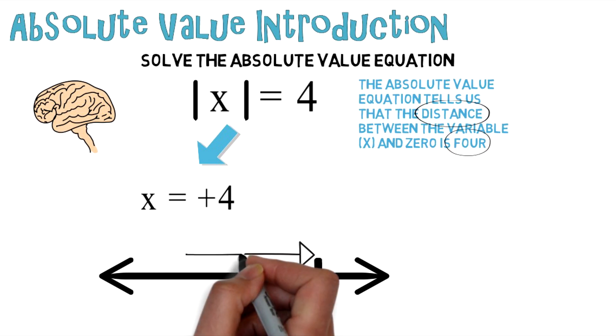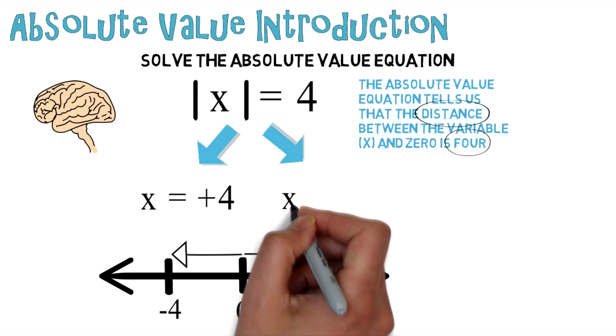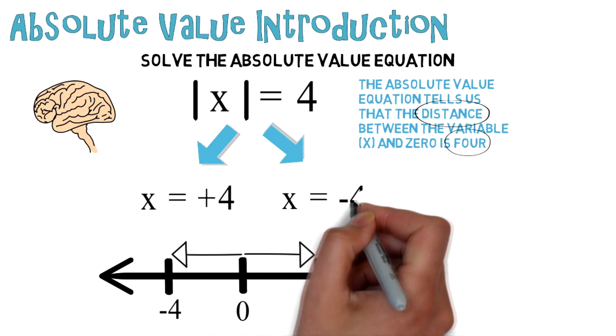And you could also travel four spaces or four units in the negative direction, which will take you to negative four. And for that reason, you can write an equation: X equals negative four.